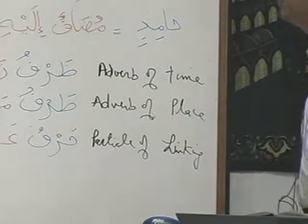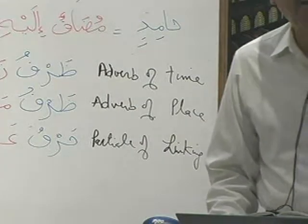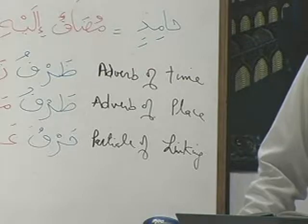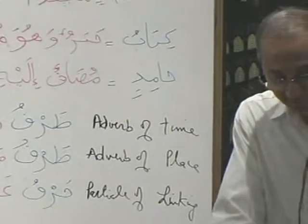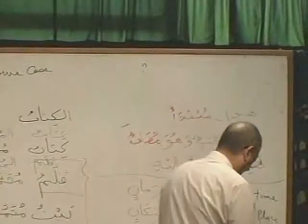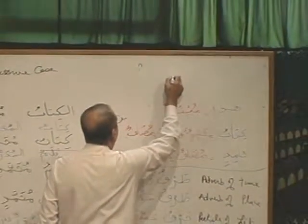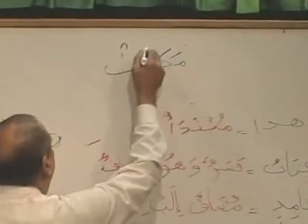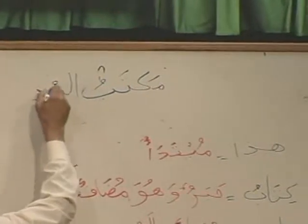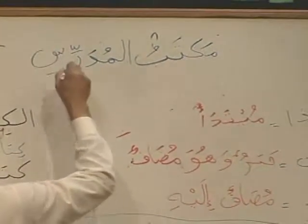Atfin — you know Atf which is conjunction — Harfu Atfin. Now: Aina Daftaru Ammarin? Translate: 'Where is the notebook of Ammar?' Huwa Alal Maktabil Mudarrishi. Now I have to tell you a story. Here is the thing: Maktabil Mudarrishi — what is this, brothers and sisters? Mudaf, Mudaf Ilaihi.